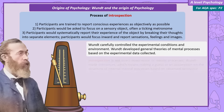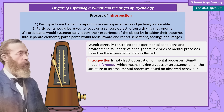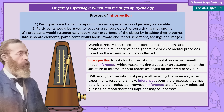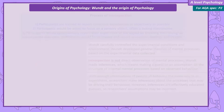It's important to make clear that Wundt isn't directly observing these mental processes — he's making inferences. This means making a guess, or an assumption, about the internal mental processes happening in his participants based on their behaviour. With enough observations of people all behaving the same way in an experiment, researchers can make inferences on the processes that might be driving their behaviour. But inferences are effectively educated guesses, so we could be wrong.